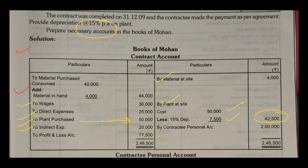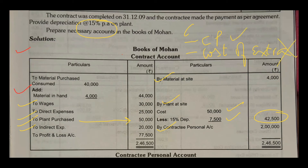Now, since this contract was completed within that particular year, what will you do? Record by contractee account. We covered this in the first video. Two things are posted on a contractee account: one is the contract price, and one is the cost of extra work done. In this question, there is no information about extra work done. That means you will only record the contract price. The contract price was mentioned at the start as Rs. 2 lakhs, so the recording has been made at Rs. 2 lakhs. All items are done. Now you will remove the profit and loss — if there is a profit, record it on the debit side; if there is a loss, record it on the credit side.